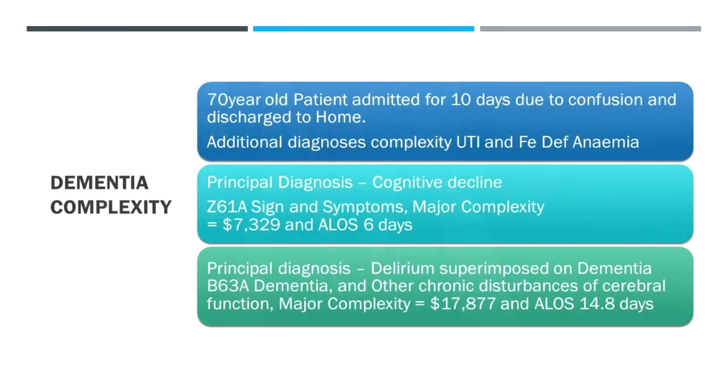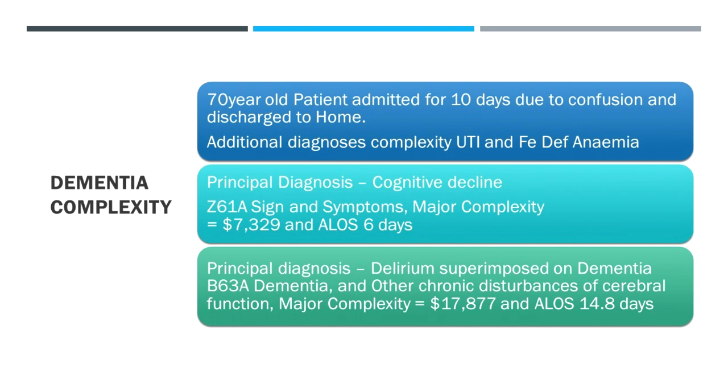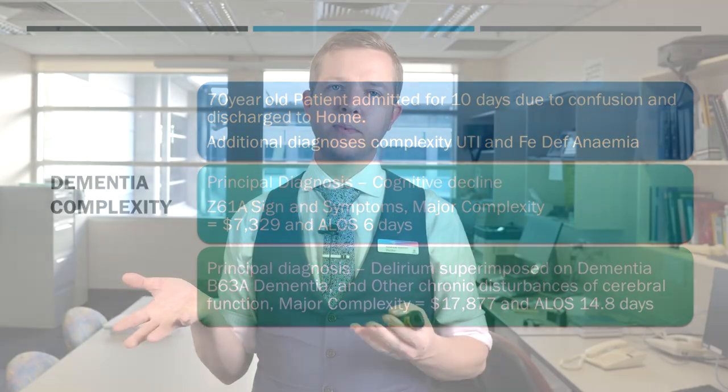Here's an example: a 70-year-old admitted for 10 days for confusion, discharged home, with UTI and iron deficiency anemia. If documented as 'cognitive decline,' average length of stay codes at six days and generates around $7,000 funding. If documented as 'delirium superimposed on dementia' linked with the UTI and iron deficiency anemia, funding increases by over $10,500 and the average coded length of stay becomes 14 days — much more reflective of the actual 10-day stay.